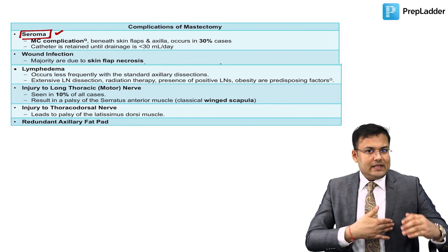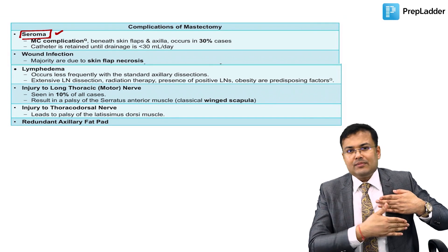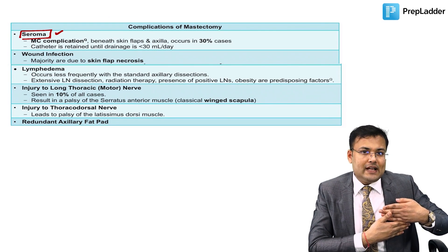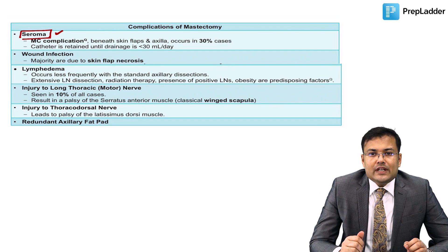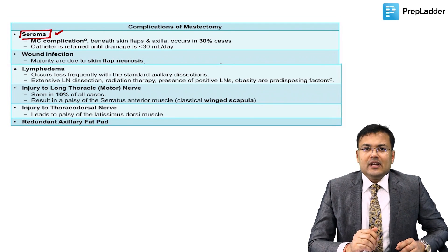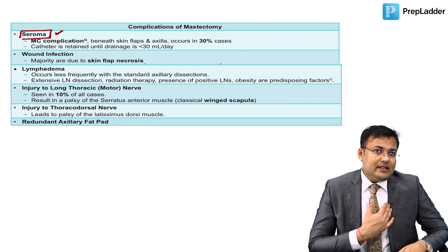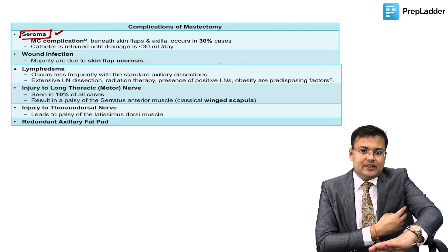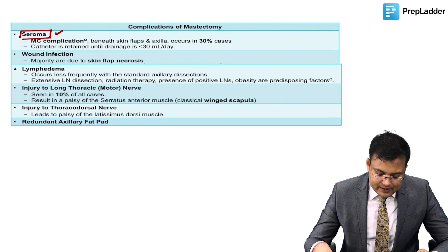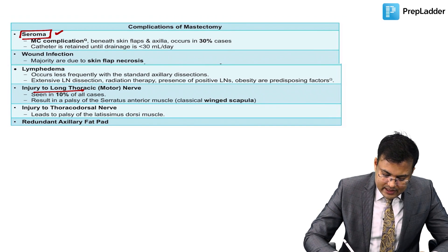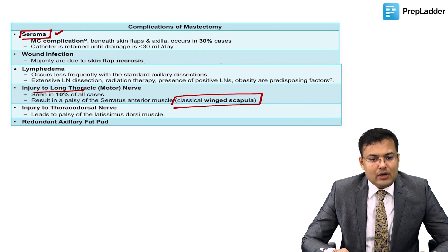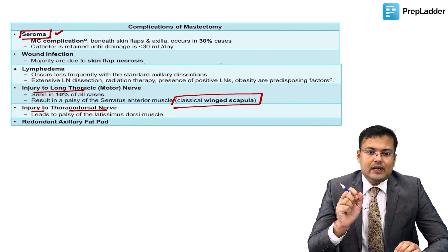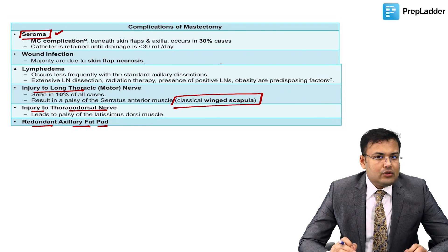After mastectomy, if extensive dissection is performed, the vascularity of the skin flap is compromised, leading to flap necrosis, which can also cause wound infection. Patients may develop lymphedema due to impaired lymphatic drainage. Two nerves injured are the long thoracic (leading to winging of scapula) and the thoracodorsal nerve. There can also be redundant axillary fat pad if axillary fat is not removed properly.